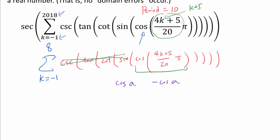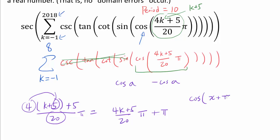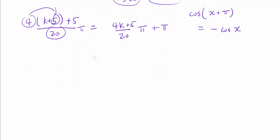Just as we did for k+10, when k goes from k to k+5, we are going to get the original expression 4k+5/20 π, but in this case we are going to have this extra 20 - 4×5 - over 20 π, or π added to it. And when you have cosine of x+π, that's negative of cosine of x, so we are getting these negatives of each other.